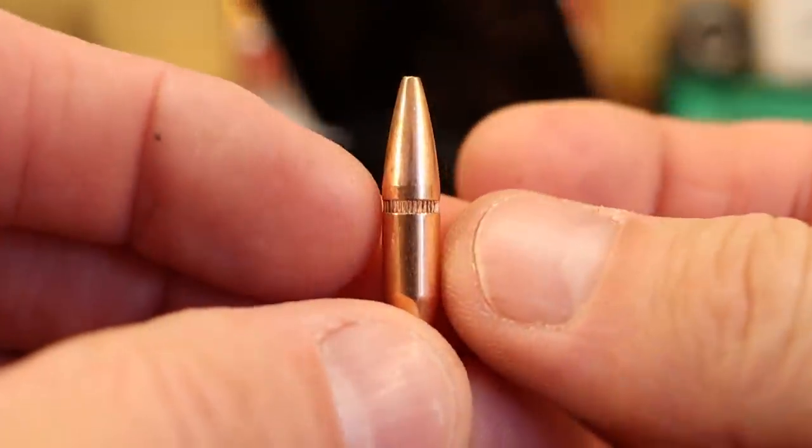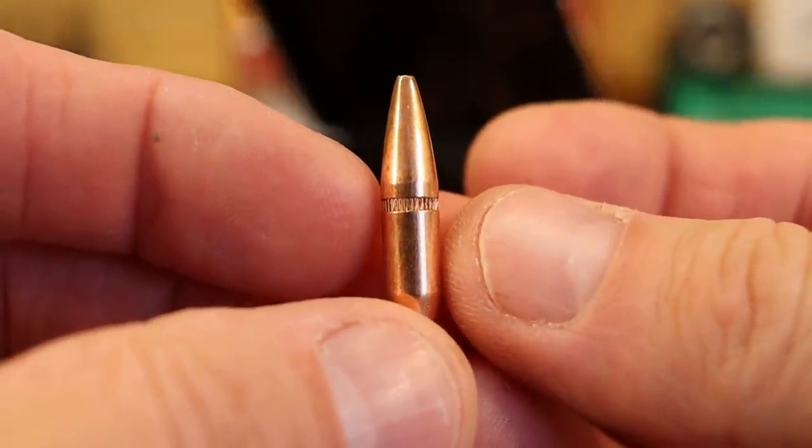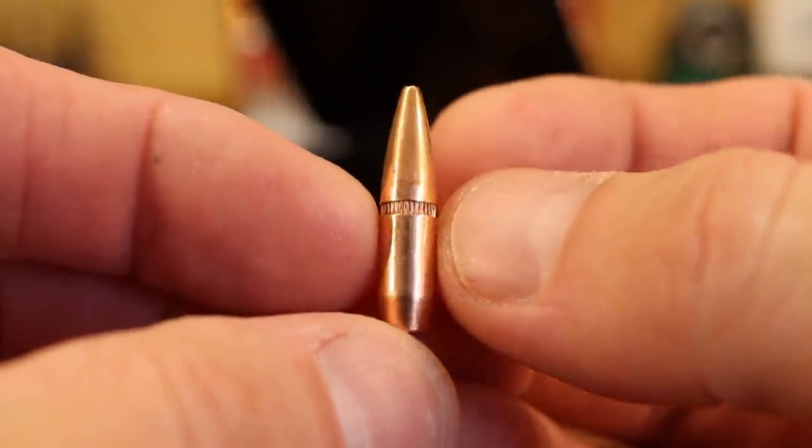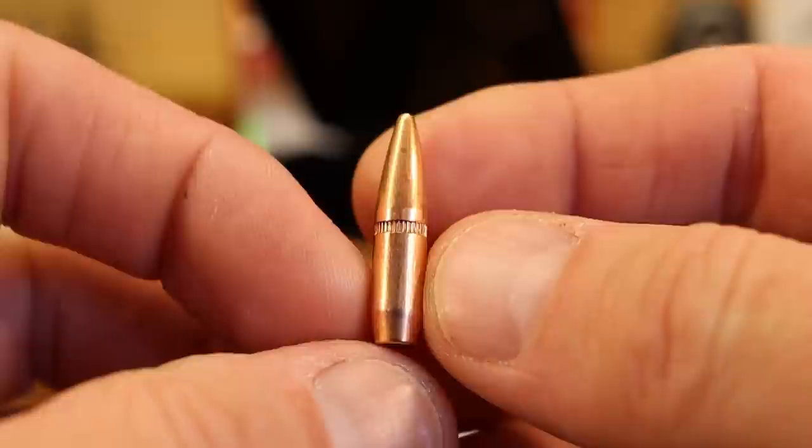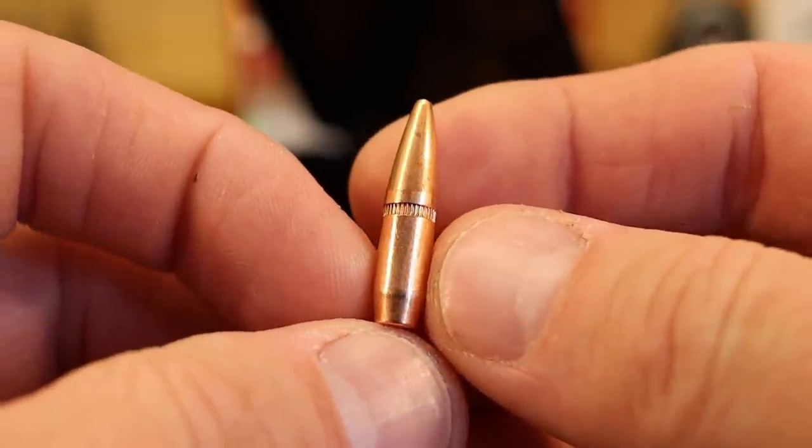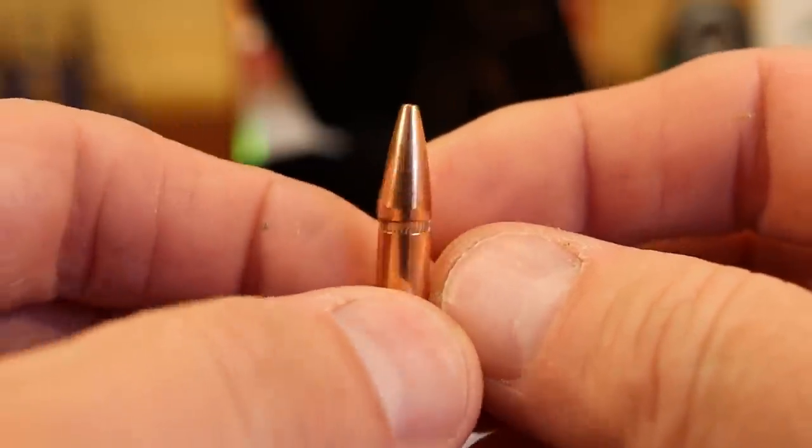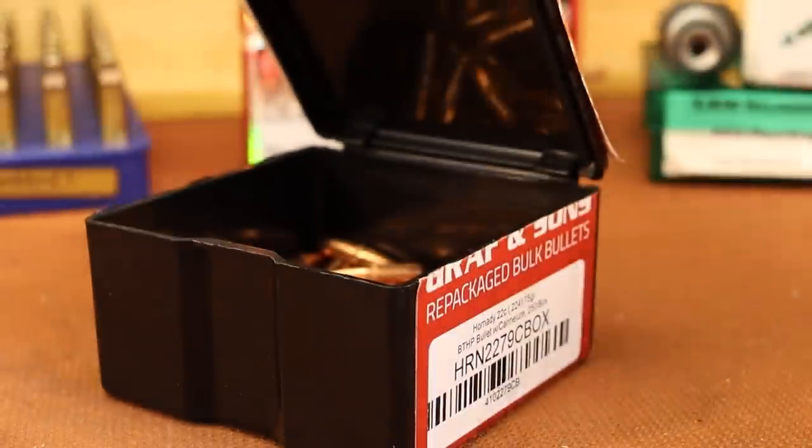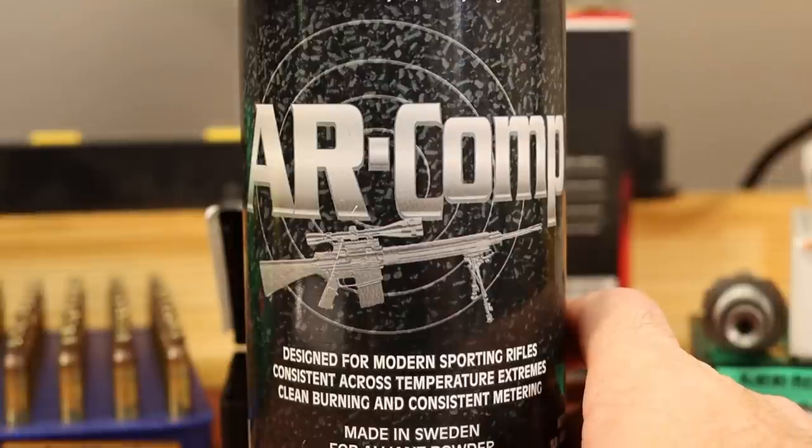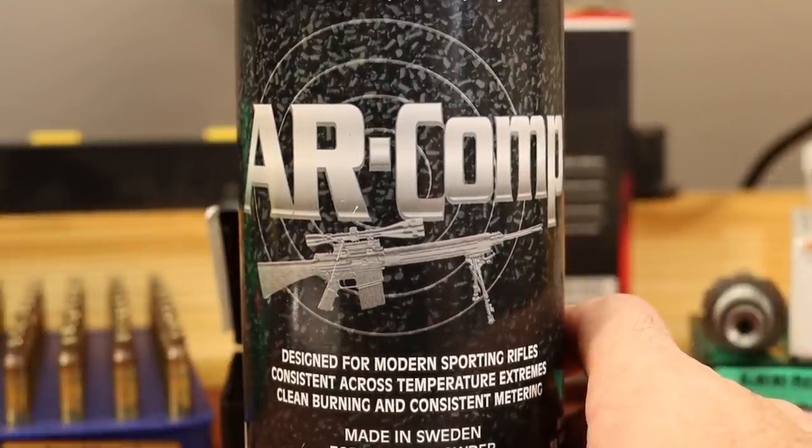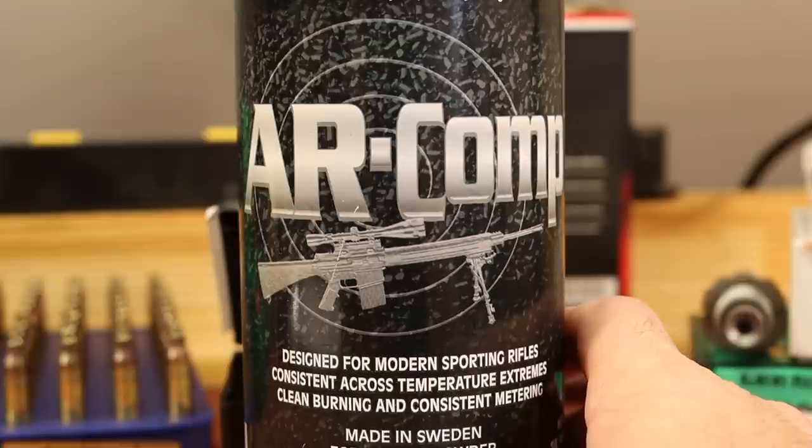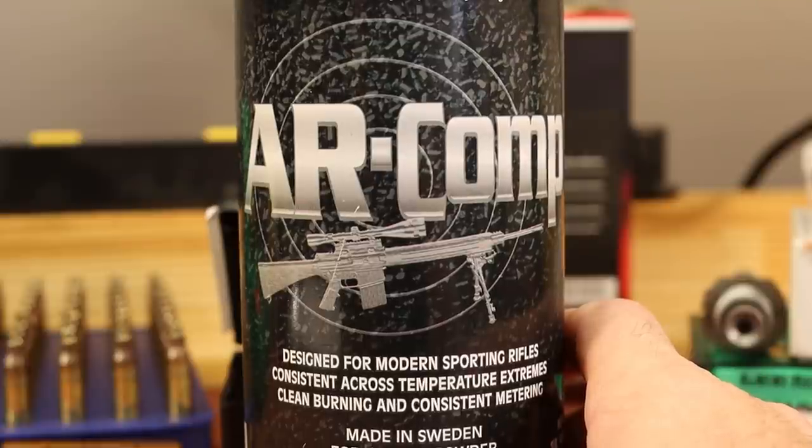Today I want to continue our work with the 75 grain Hornady Boattail Hollow Point with a cantalure. In the last video we shot a bunch of loads and powders you guys recommended and got some pretty good groups. Today I want to take one powder that shot really well, Alliant AR Comp, and shoot it at a bunch of different overall lengths to duplicate those results and see how overall length is affecting the situation.